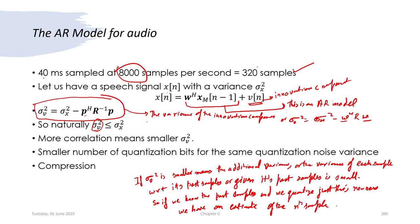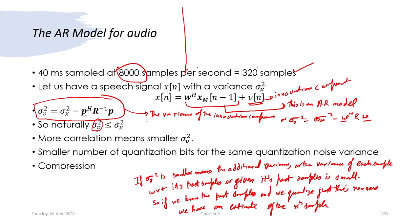We quantize just the newness, so we know what is already there, we quantize what is new, combine the two and get a quantized version of the nth sample. We know that the number of quantization levels matters here.